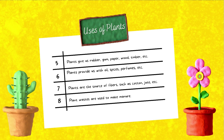Plants support rainfall and prevent soil erosion. Plants give us rubber, gum, paper, wood, and timber. They also provide us with oil, spices, and perfumes. Plants are the source of fibers such as cotton and jute. Plant-based materials are also used to make manure.